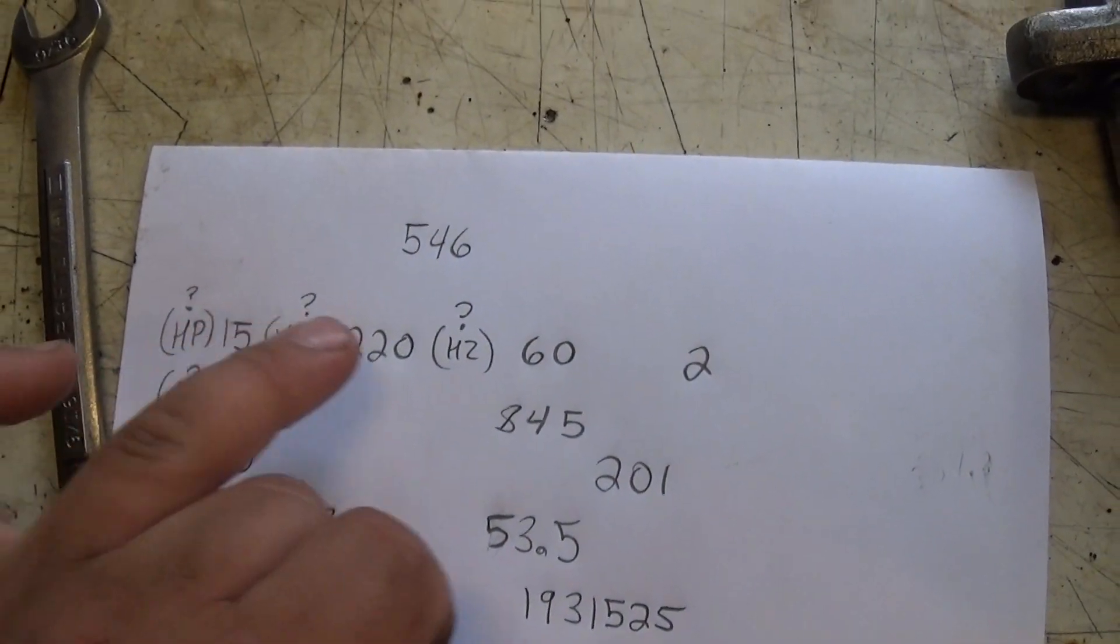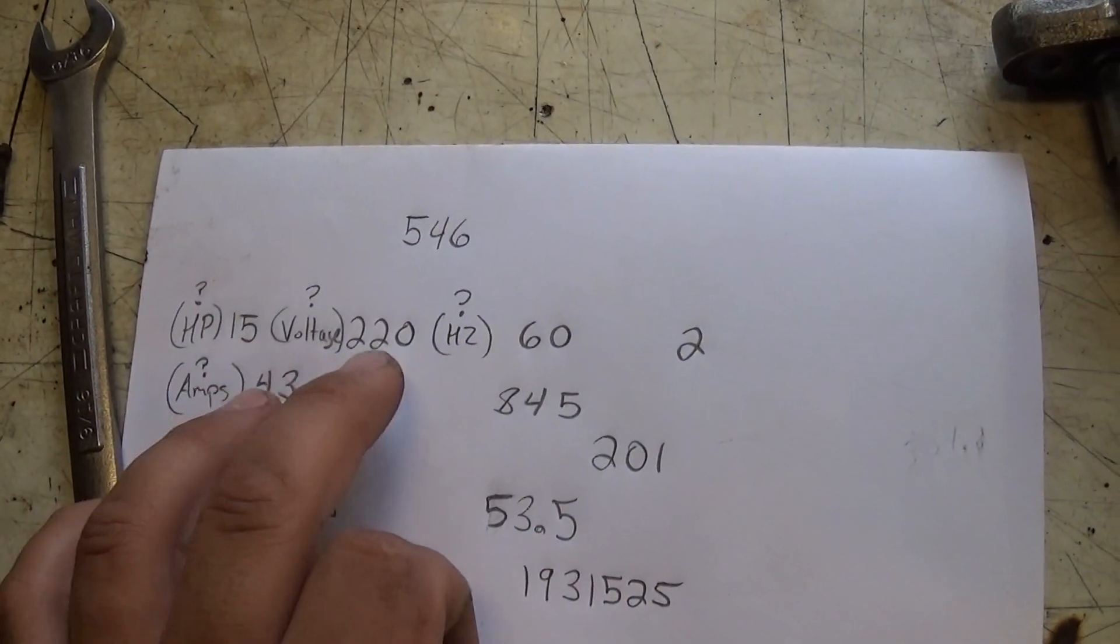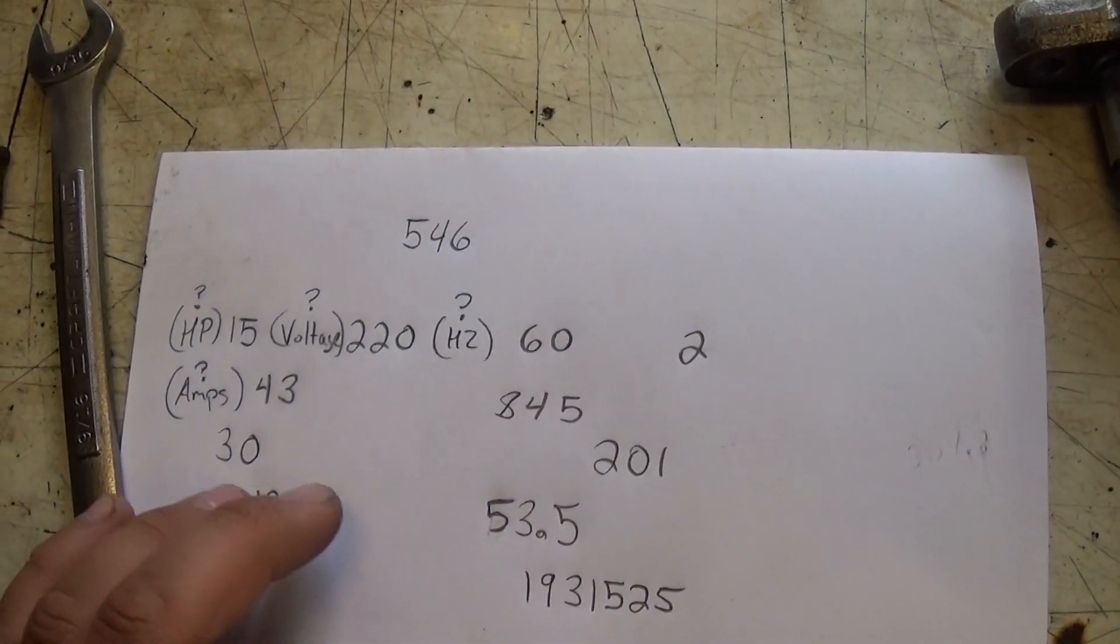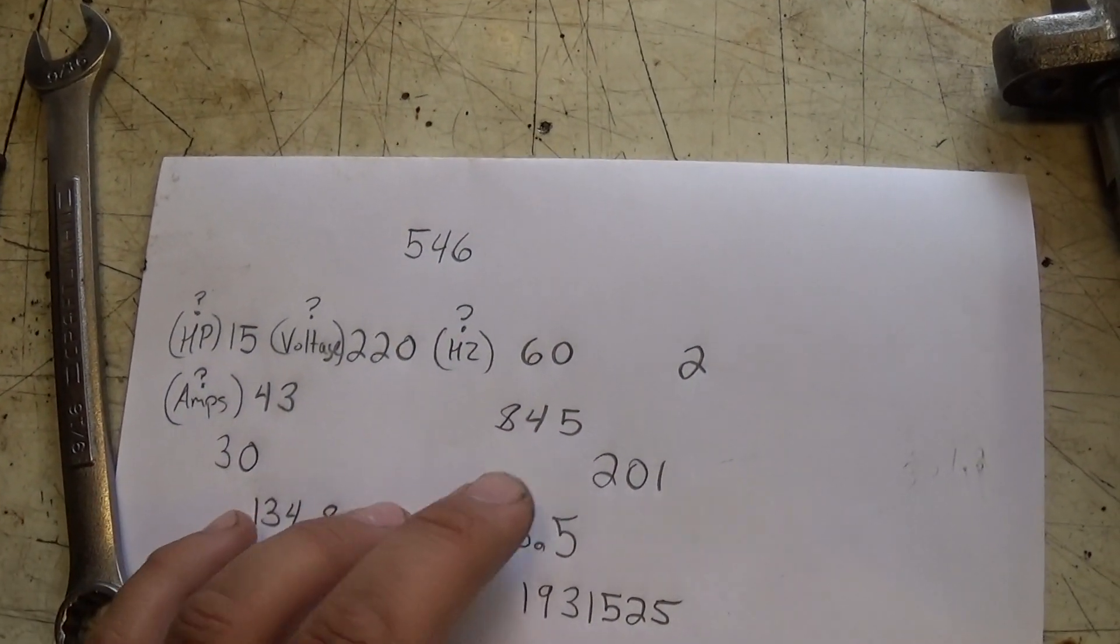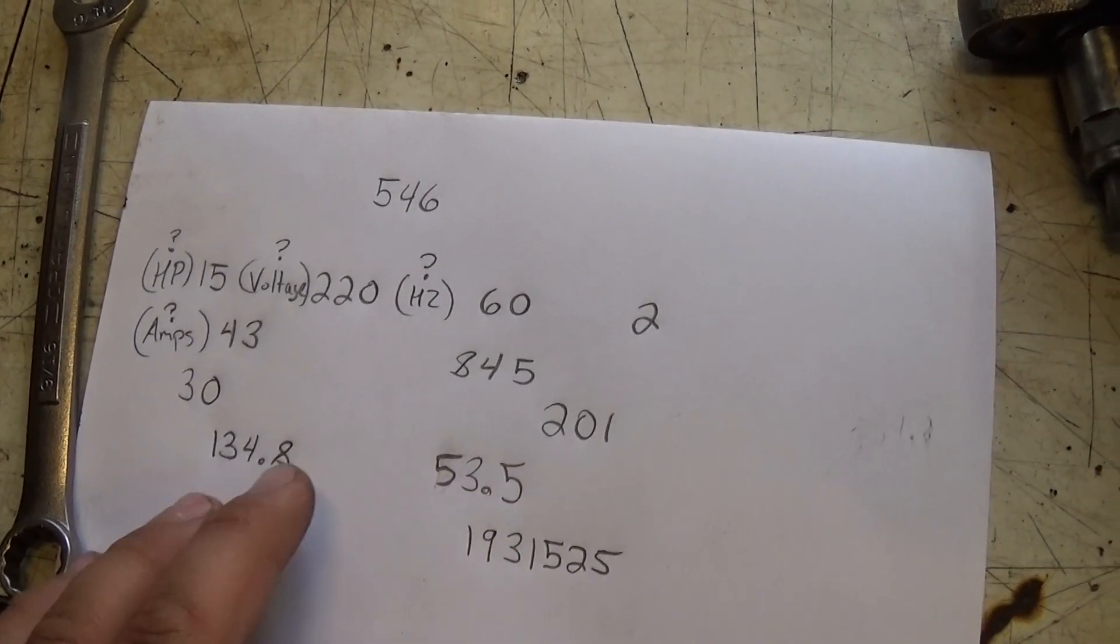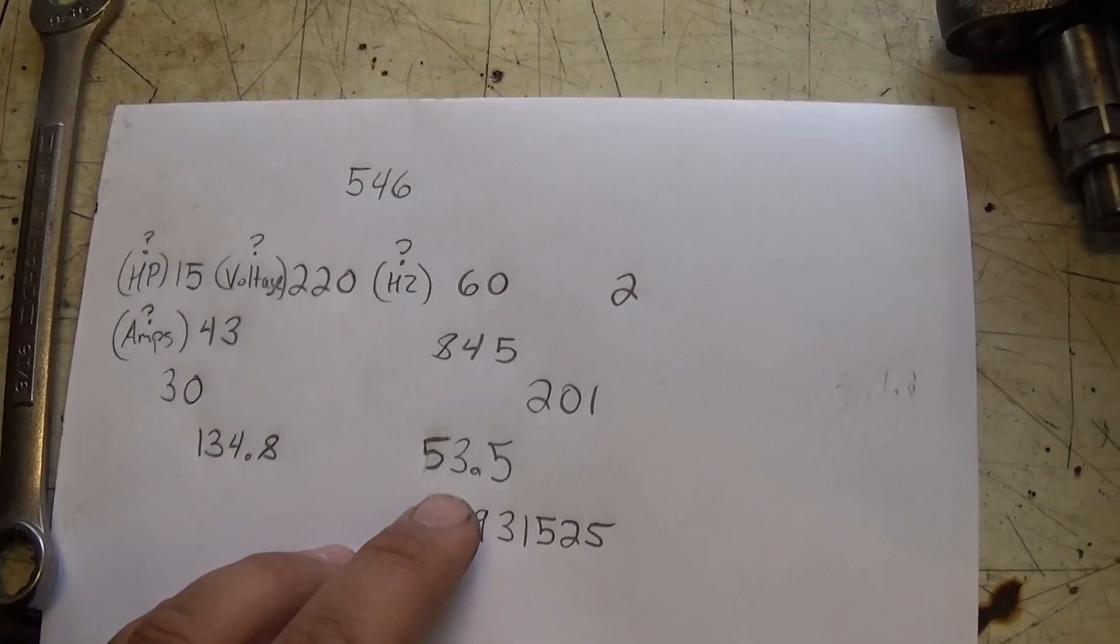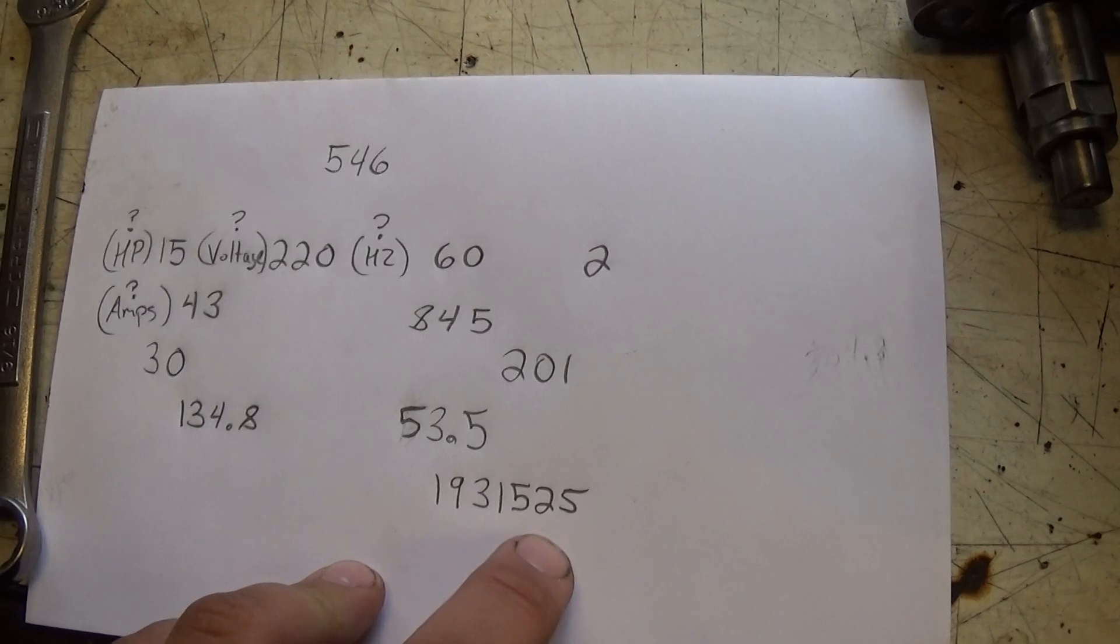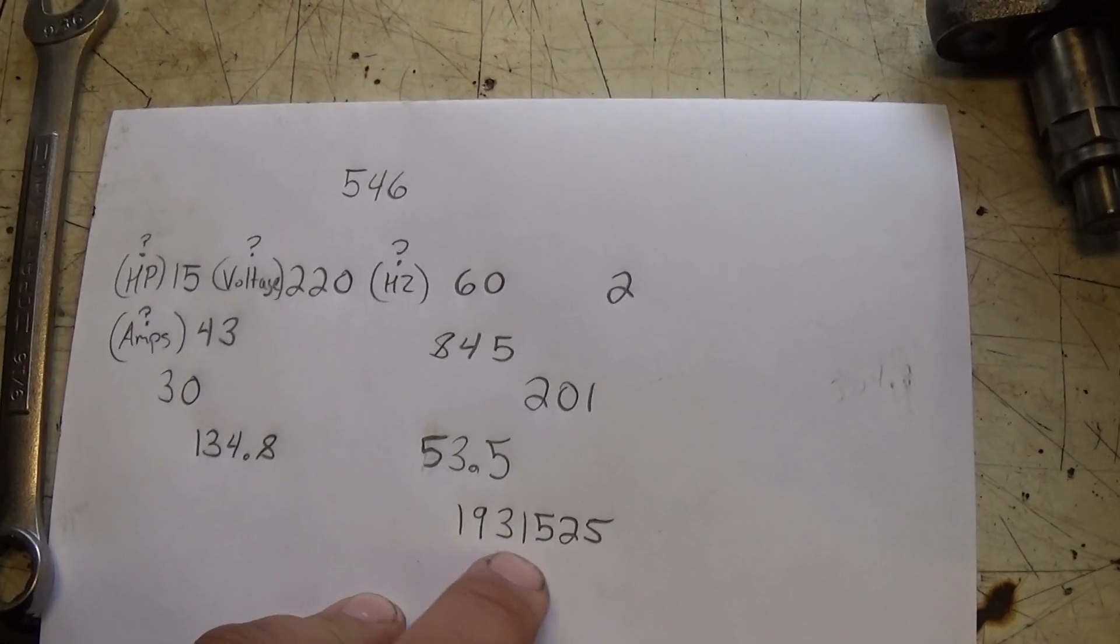So we've got 546, 15, 220, 62, 43, 845, 30, 201, 134.8, 53.5, and then this number down here.